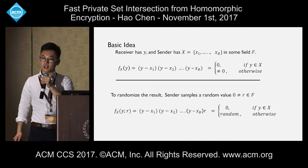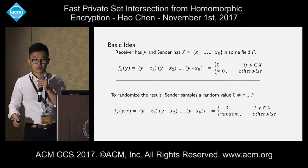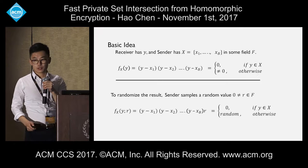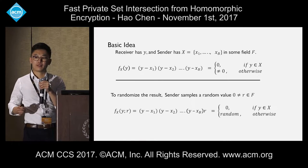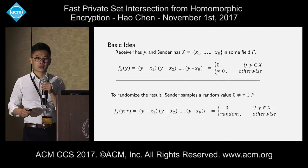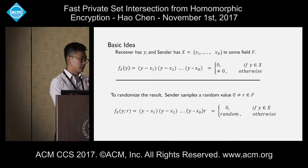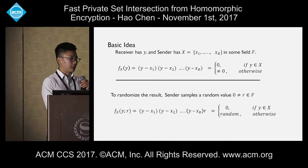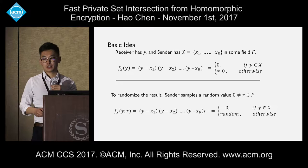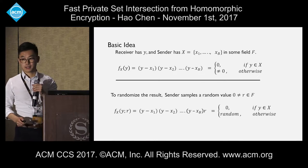However, this evaluation reveals something about the set X. In order to randomize the result, the sender needs to sample some non-zero random value in the field and multiply it to the polynomial. In this case, the polynomial will evaluate to zero if Y is in X, and will evaluate to a random number if it's not the case.